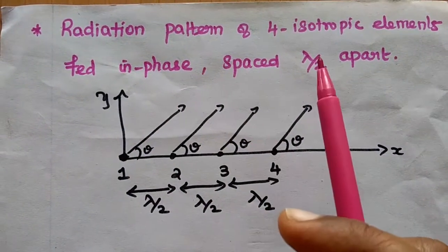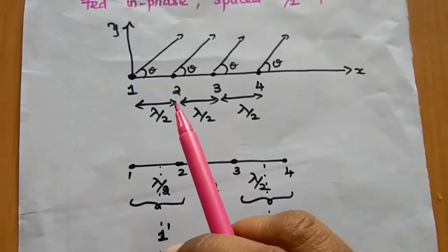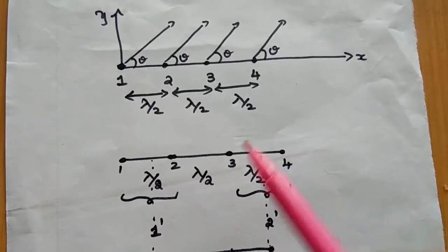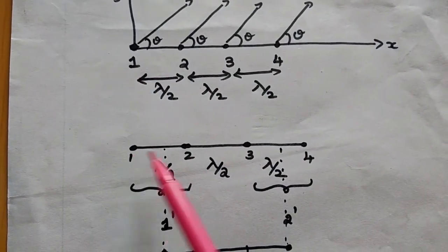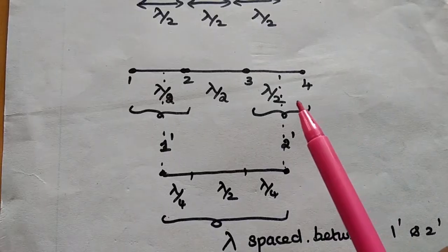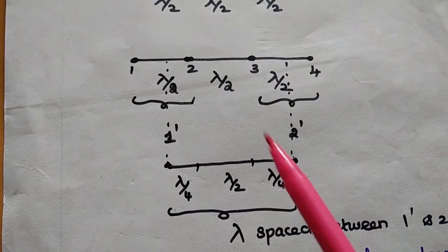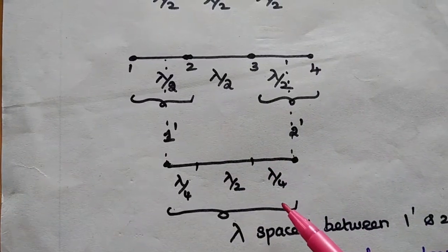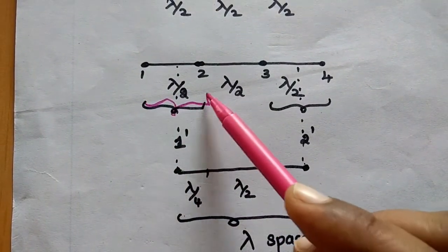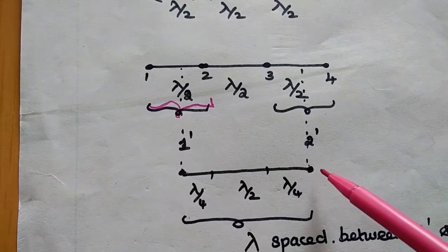Now we are going to draw the radiation pattern of four isotropic elements fed in phase, spaced λ/2 apart. We have four point sources with spacing λ/2 between them: elements 1, 2, 3, 4. To apply pattern multiplication, we need to convert these four elements into two individual elements. We combine the first and second elements as one group (1-dash), and the third and fourth elements as another group (2-dash).